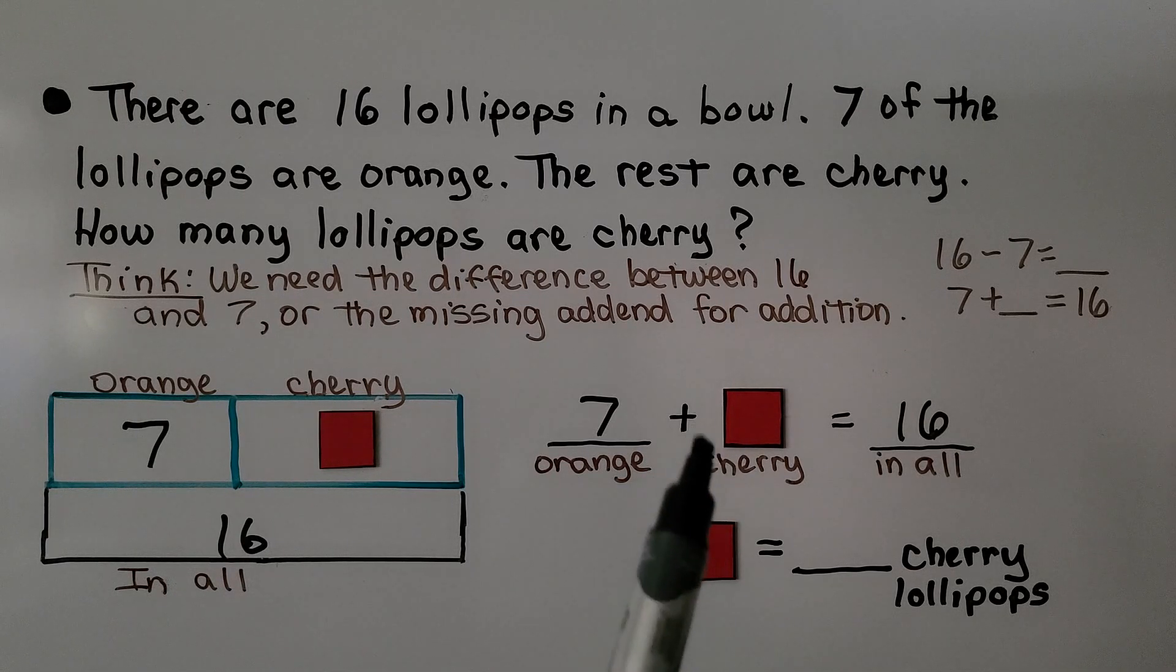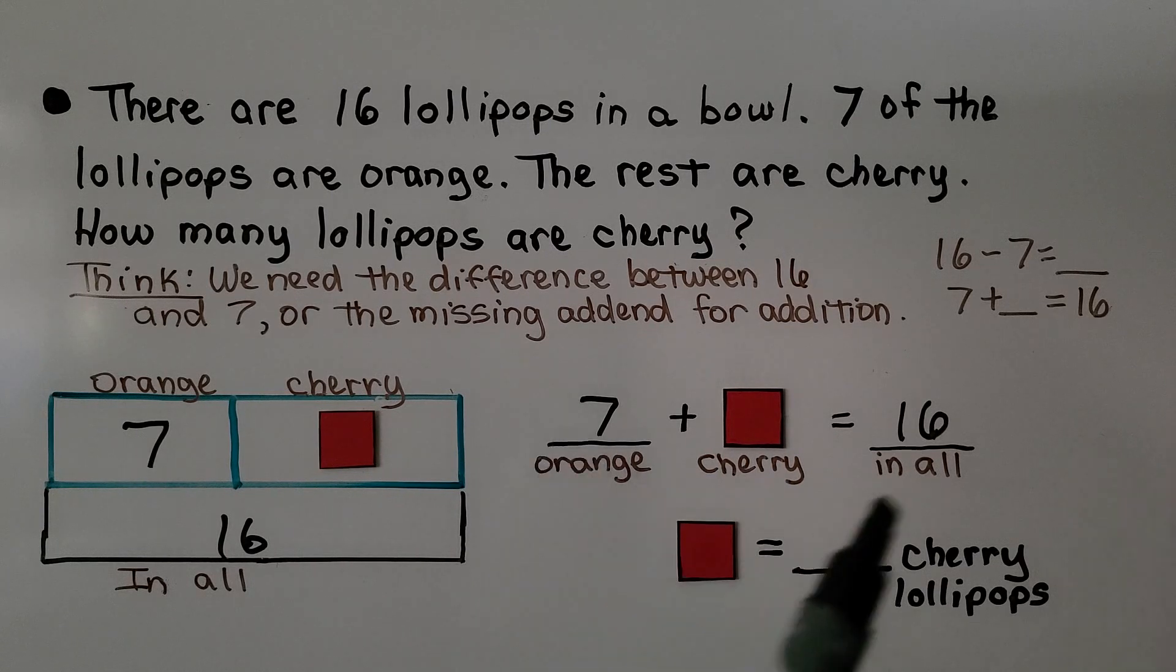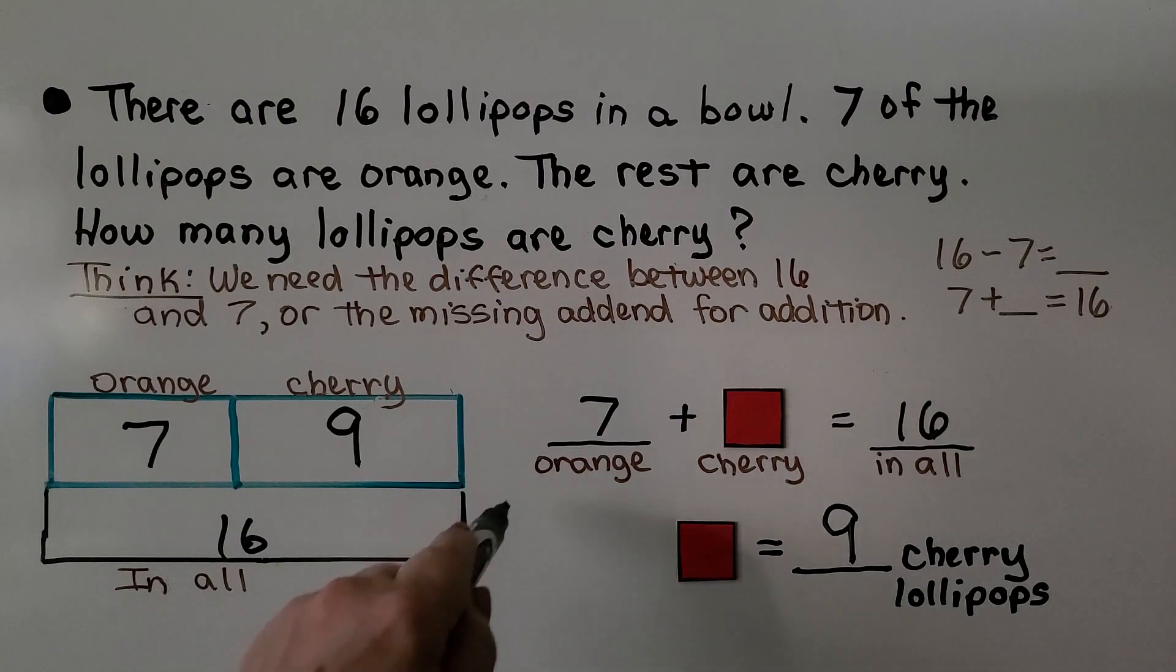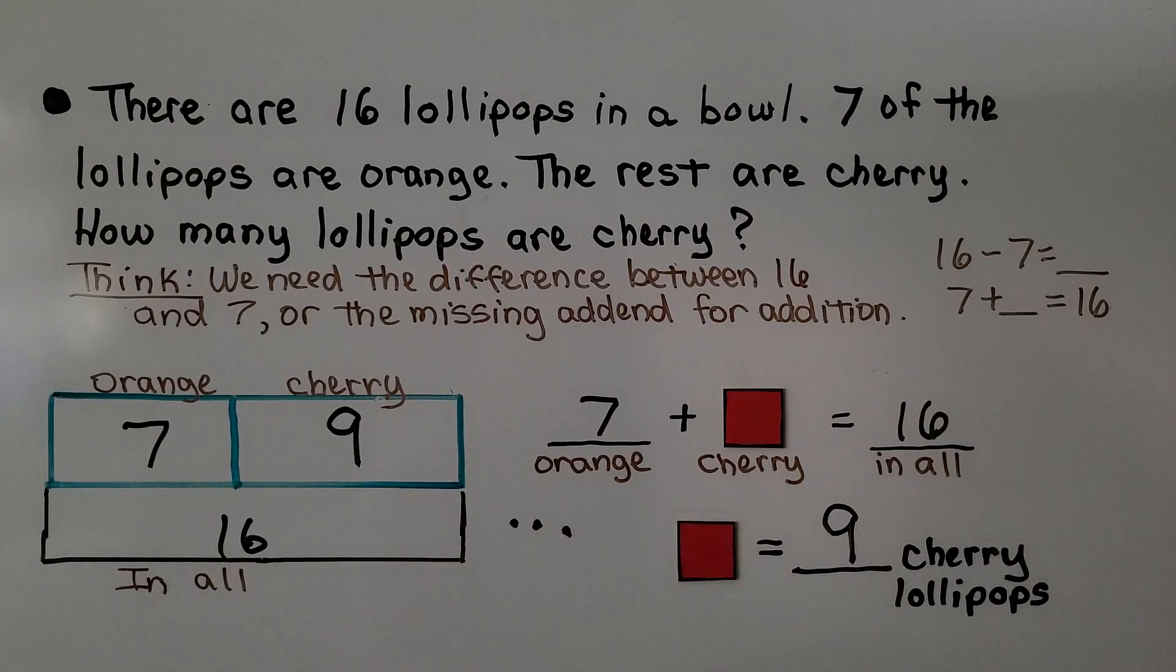7 plus the cherry is equal to 16. We need to figure out what this number is that if we add it to 7, it will equal 16. Do you know? If you said 9, you're right. 7 needs 3 more to be a 10. Now we're at 10. We need 6 more to be 16. We add the 3 and the 6 together. That's 9. That's 9 cherry lollipops in the bowl.